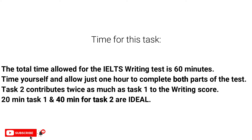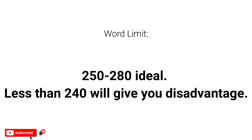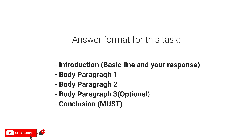The total time for both writing tasks is 60 minutes, and since Task 2 is more important, 40 minutes should be spent on it. The ideal word limit is 250 to 280 words. Writing less than 240 words puts you at a disadvantage.